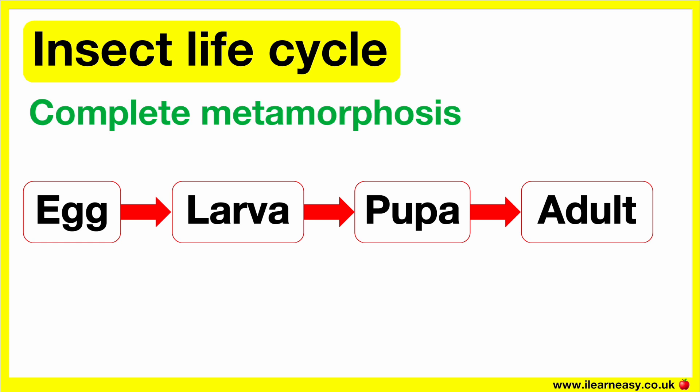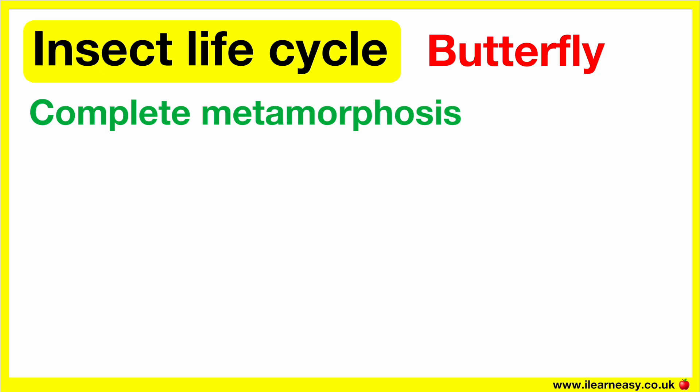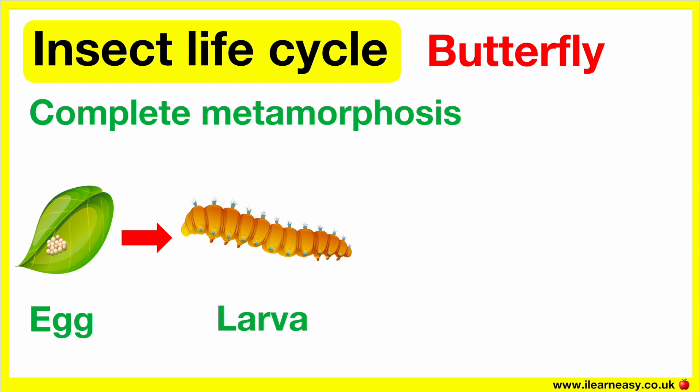The life cycle of a butterfly is an example of complete metamorphosis. This is because the butterfly in its larva stage looks completely different from when it becomes an adult. First, a female butterfly lays eggs on the leaves of a plant. Inside the eggs, a caterpillar begins to grow. This caterpillar is also known as the larva. This is the worm-like creature inside the egg. When the caterpillar is large enough, it leaves the egg by eating it.